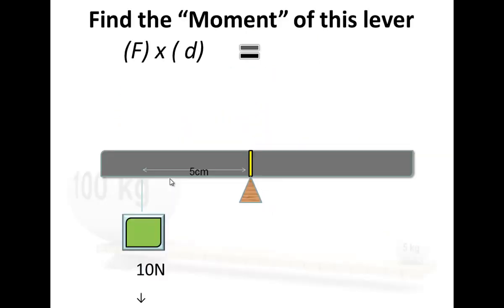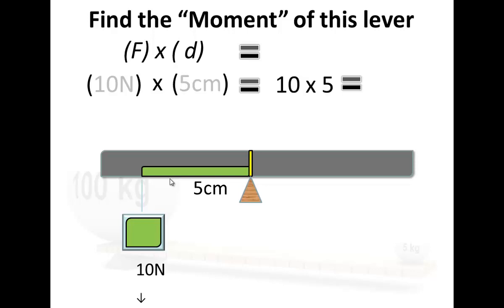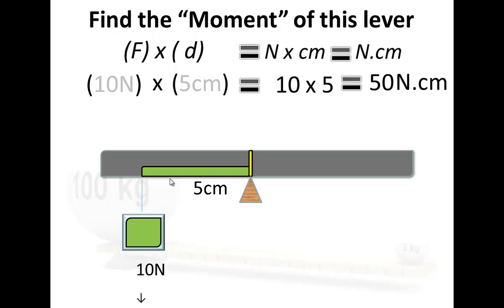Numbers. 10 newtons times 5 centimetres out from the pivot — you just multiply them together: it's 50. Oh wait, not quite finished because we need the unit. The unit here is not a real unit; they just kind of mangle two other units together. It's the newtons of the F and the centimetres of the D — you just call it newton centimetres. So 50 newton centimetres. We're done.